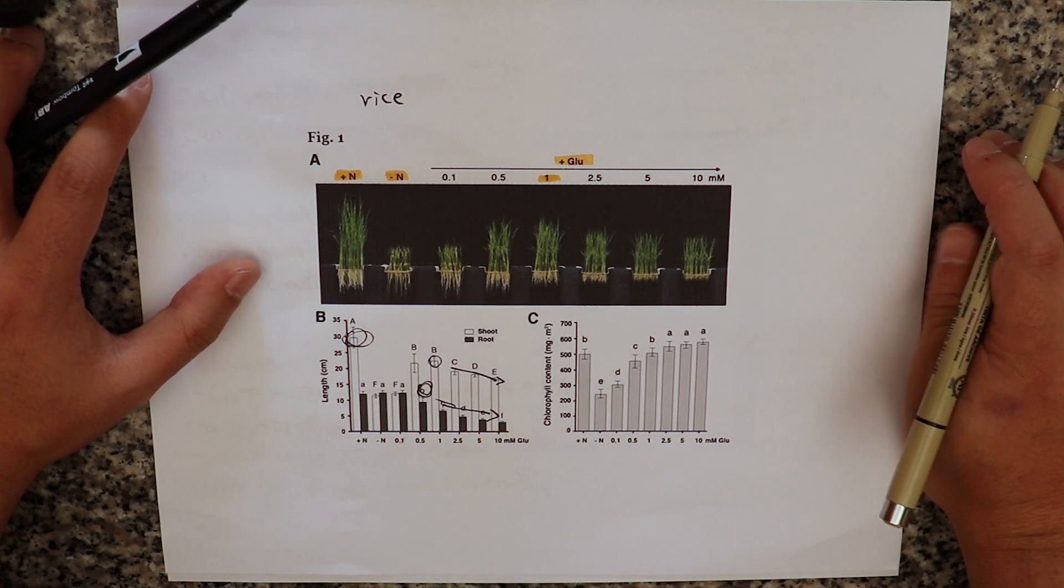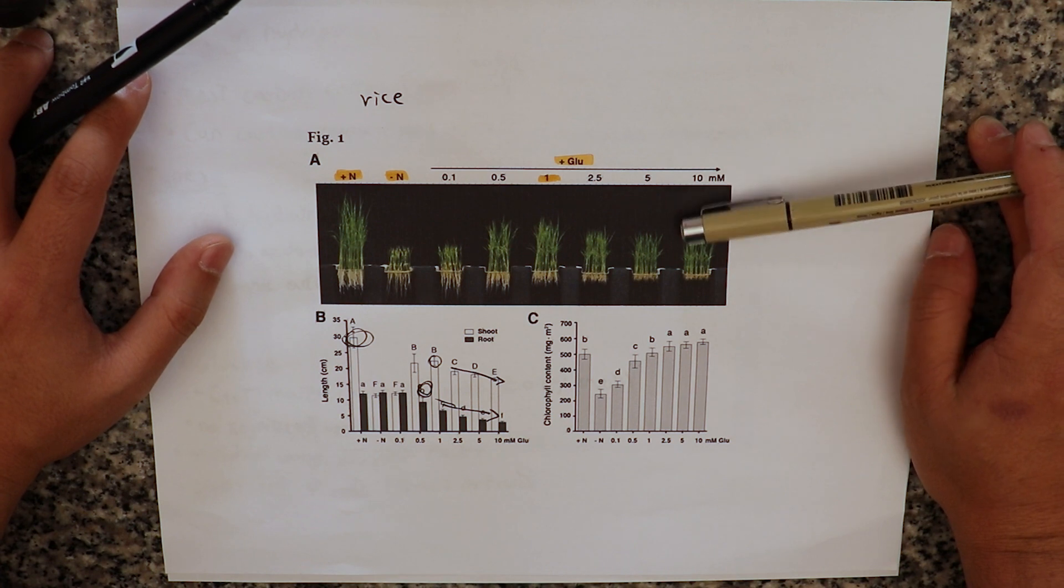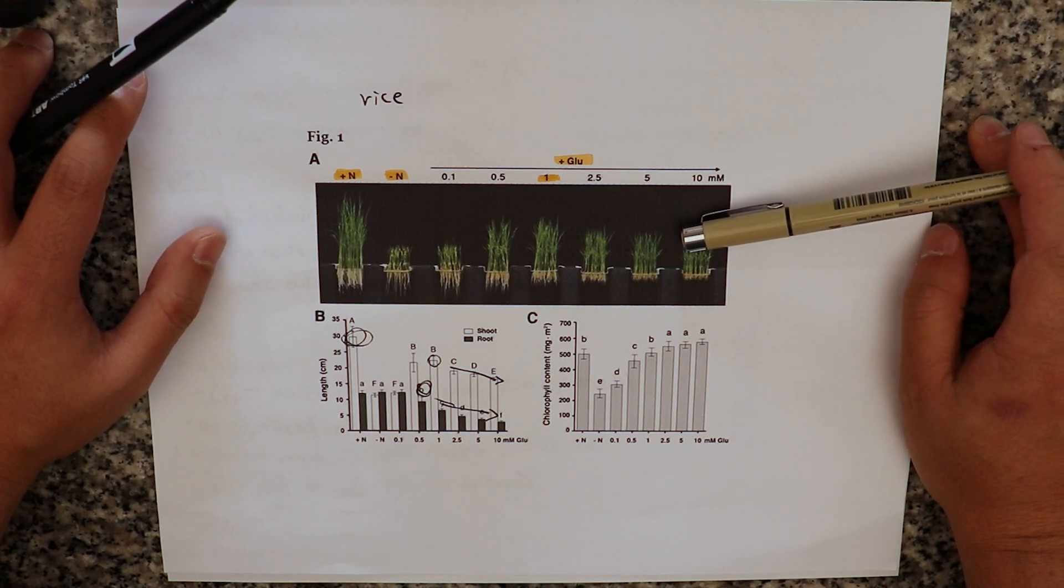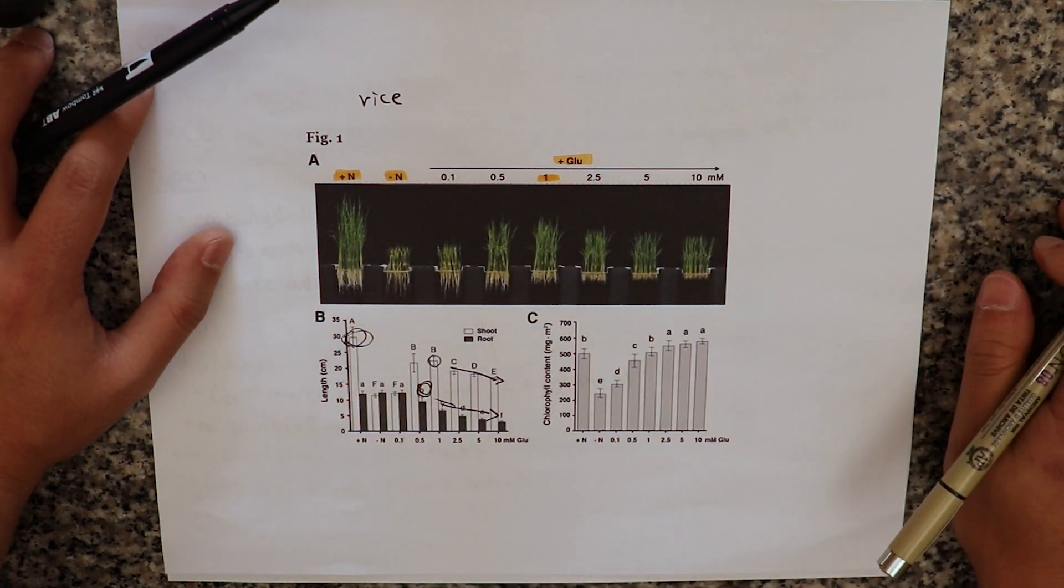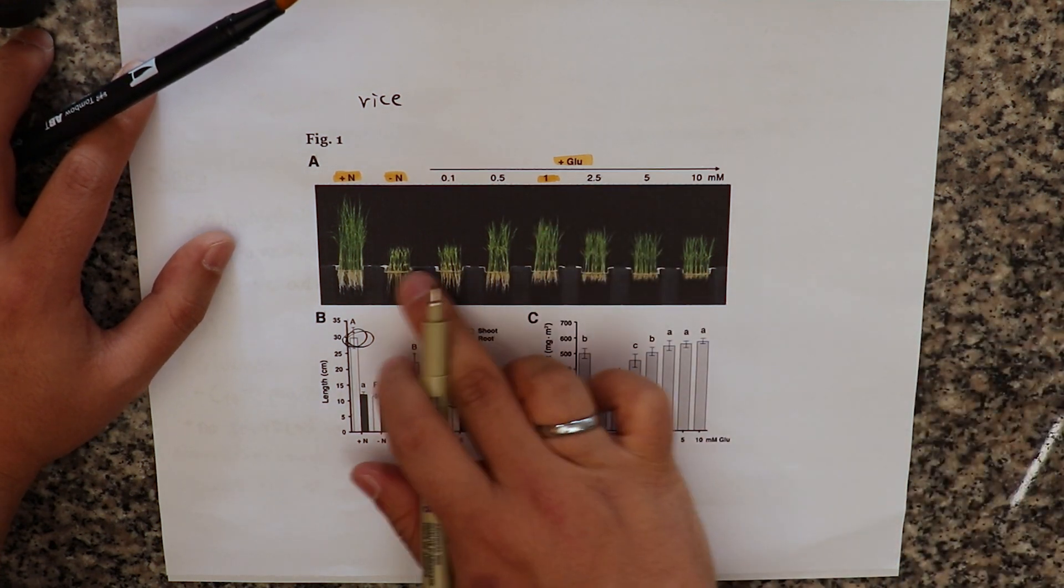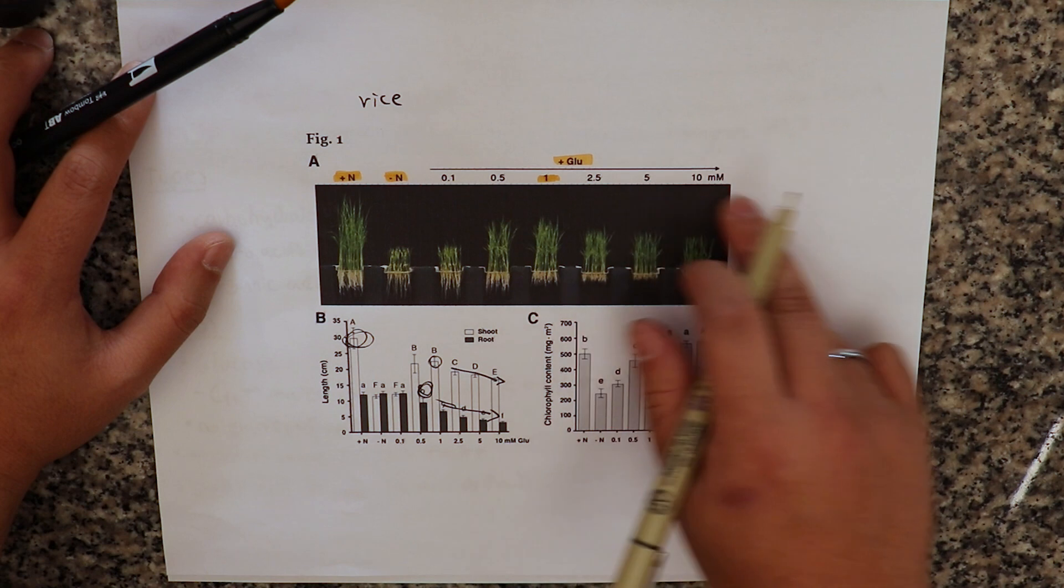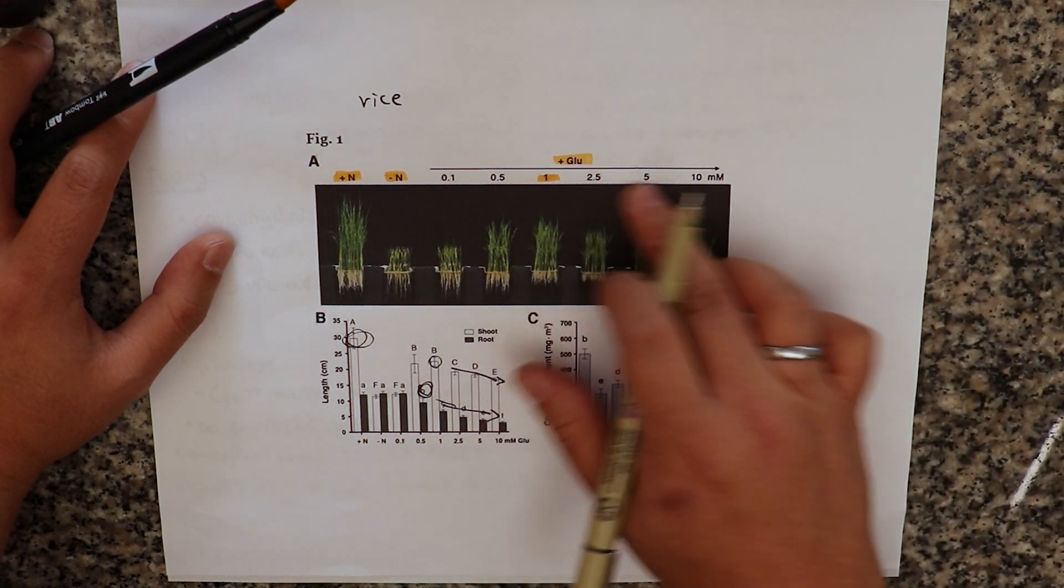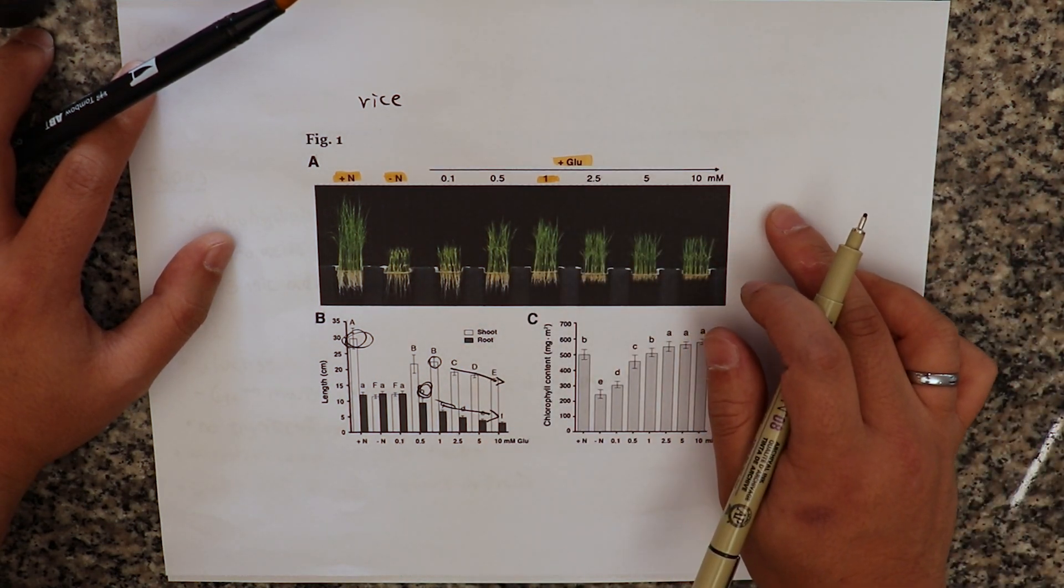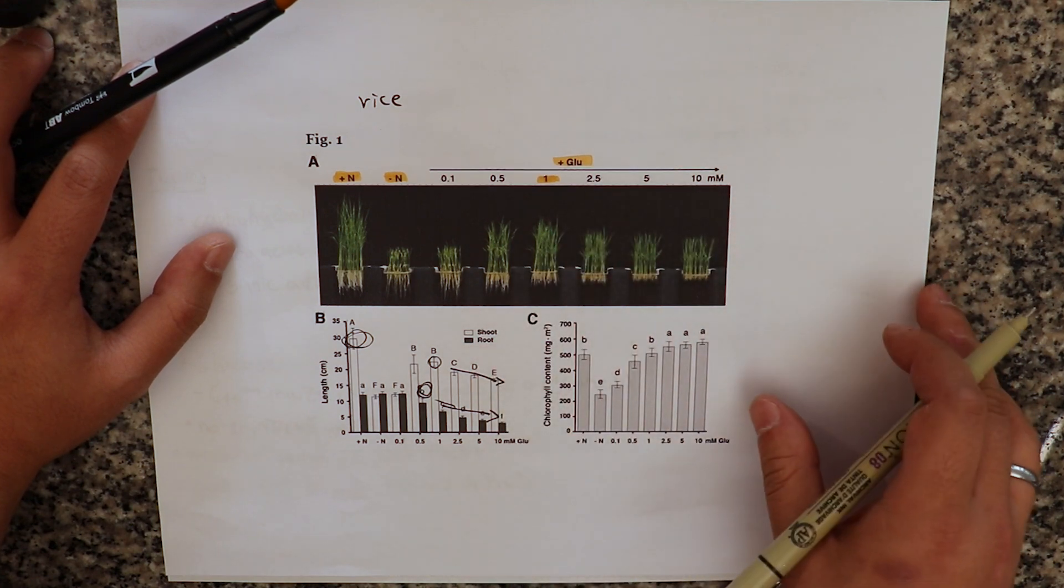So you can see that while glutamate can replace some of the nitrogen transport, it cannot replace the entire nitrogen transport of the plant. And the more glutamate we add, the effect is not bigger by adding significantly more glutamate. It actually goes down if we add too much of it.